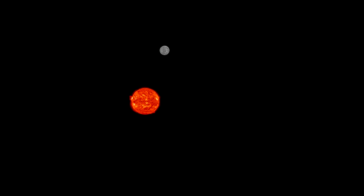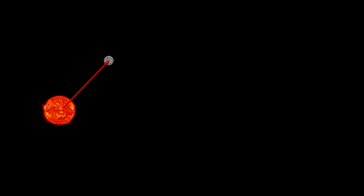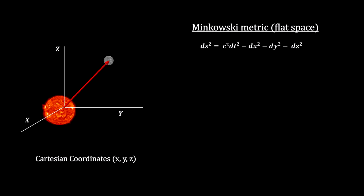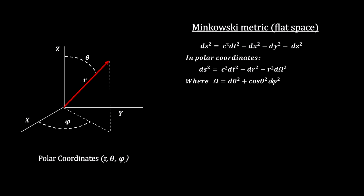Another school of thought held that Newton's theory simply did not hold up that close to the Sun. Einstein was one of them. And his general theory of relativity, describing the impact of the curved space near the Sun, provides a full explanation for the observed precession, without the need for an extra planet. Einstein himself thought that this result was the most critical test of his theory. Here's how it works.